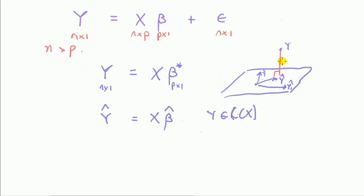If we do this, that's longer than this one. If we do this to here, that's longer. So this is the smallest distance possible, if you're lying on the column space of X, to Y.